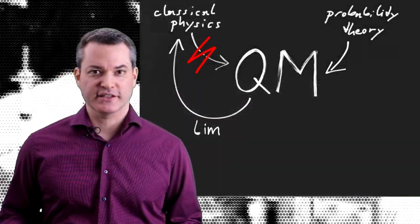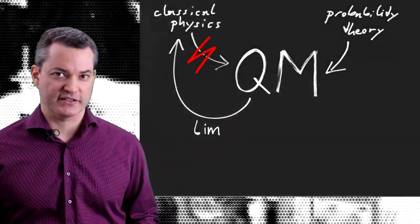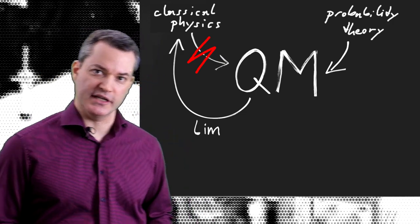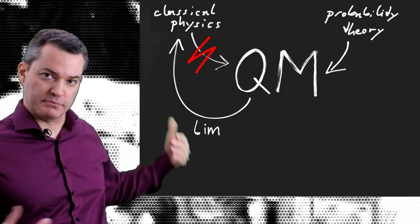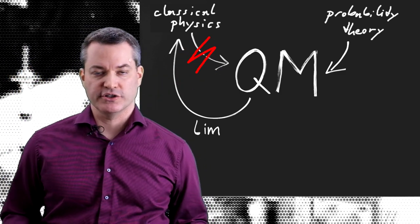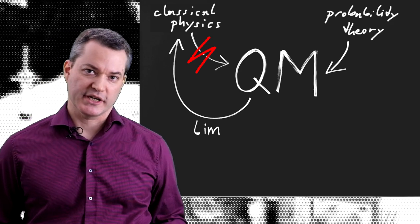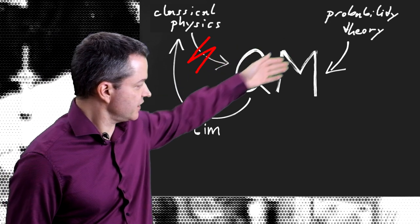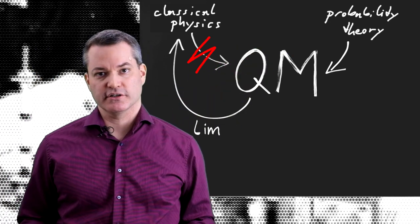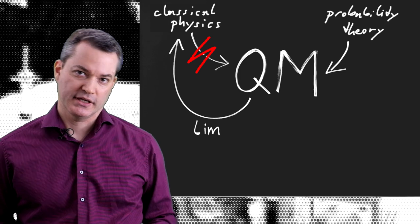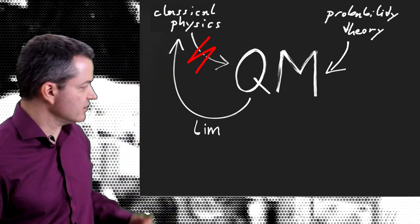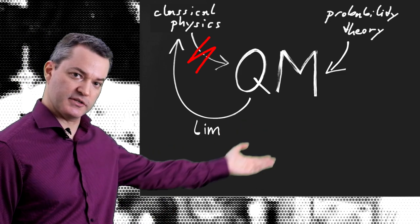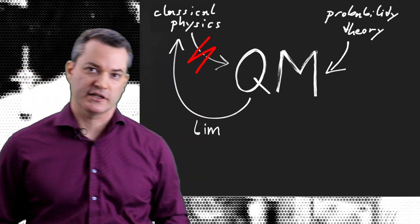Quantum mechanics is not an extension of classical physics as it was known before 1926. Instead, quantum mechanics introduces a disruptive change that puts our physical world view on a new footing. Quantum mechanics may be understood as an extension of probability theory that is applied to our observation of the physical world. In many, but not in all cases, the old predictions of classical physics emerge as approximations to the exact quantum mechanical predictions.